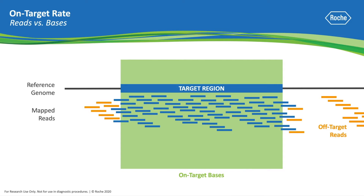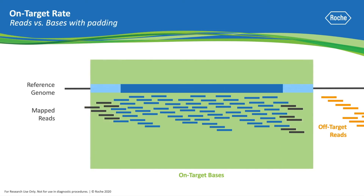Typical on-target rates for NGS target enrichment range from 50 to 80%. Some analysis pipelines include padding or buffering around the target regions before calculating the on-target rate. With the padded target regions, more reads and more bases are now considered on target, including some reads that contain no bases overlapping the primary target region. This results in an inflated on-target rate and a higher reported efficiency of the target enrichment.